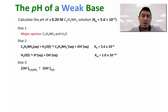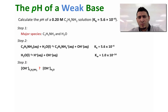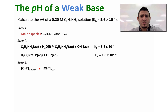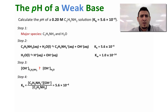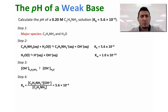In step three, we have to decide which equilibrium will be determining the pH. Looking at the values of Kb and Kw, we can see that Kb is way higher than Kw. Therefore, the equilibrium of the reaction of the base with water will be the one that determines the pH. In step four, we write the expression of the equilibrium constant, which is the Kb in this case, and that's equal to the product of the concentrations of C2H5NH3⁺ and OH⁻ divided by the concentration of the base.